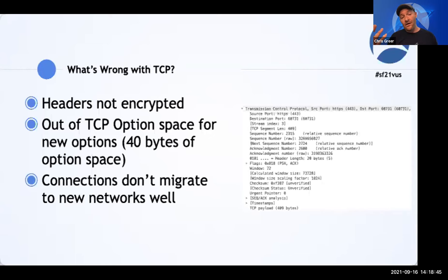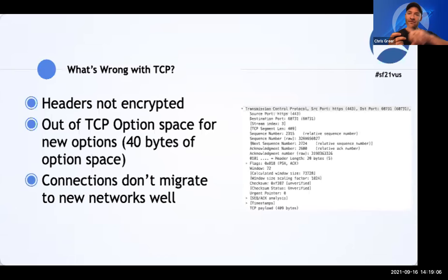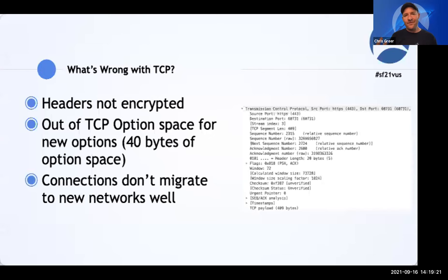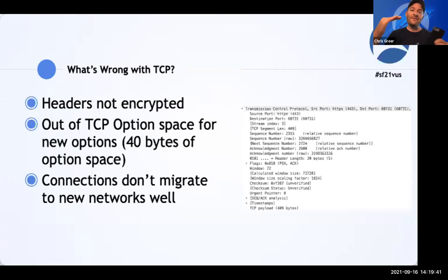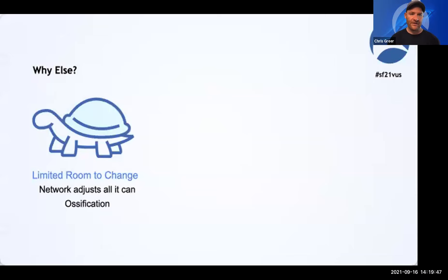Another limitation with TCP is that connections don't migrate to new networks well. If I'm on my phone checking email or video, and I walk from the office out to my car and flip from corporate Wi-Fi to the LTE network — as soon as I jump networks and my four-tuple changes, so my source IP, source port, destination IP, destination port — TCP doesn't like that. TCP breaks. It can't jump to new connections very well. We want seamless service from one network to another.